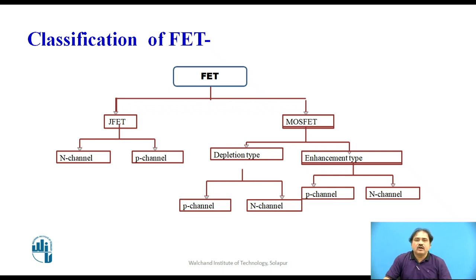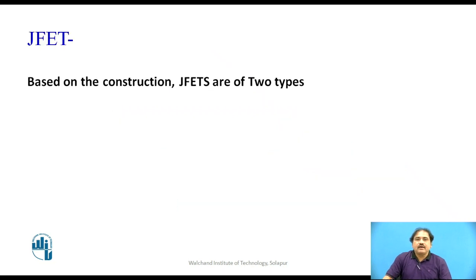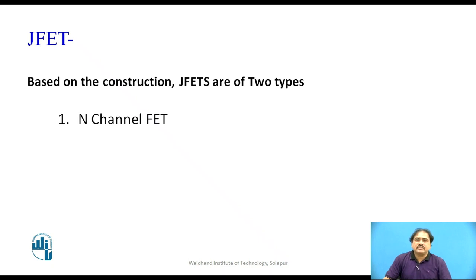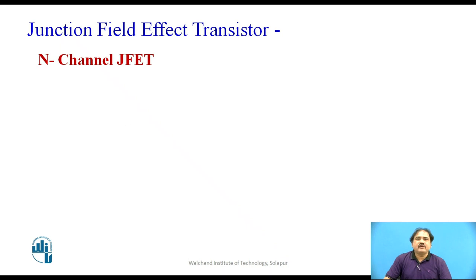Again, below all these categories, we can get two subtypes: one is called N-channel and the other is called P-channel. These types are because of the type of material we use to construct the FET and the type of current carriers we have in the given device. The J-FETs have two different types. Normally J-FET is also simply called as FET, so I will use the term FET which means it is nothing but the J-FET. The first type is N-channel and the second is called P-channel.